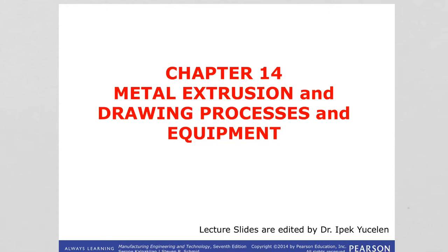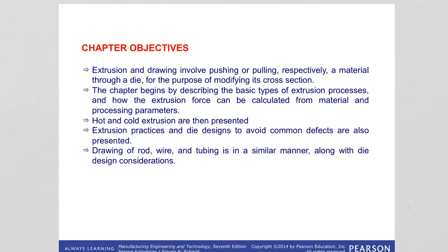In this chapter we will learn about metal extrusion and drawing processes and equipment. The objectives include learning about extrusion and drawing, which involve pushing or pulling a material through a die for the purpose of modifying its cross section.